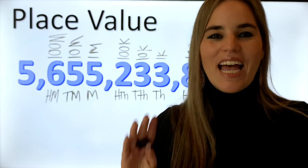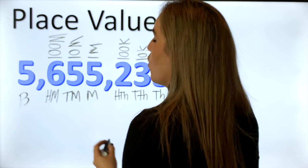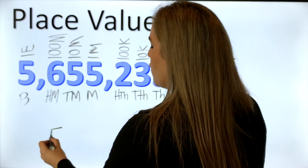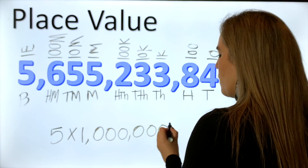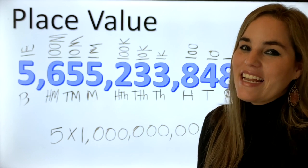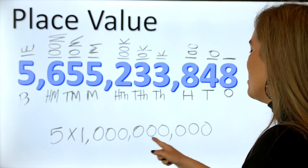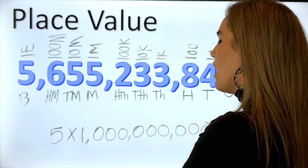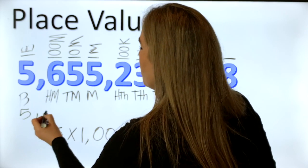Now we're gonna do the billions — this is our last digit. We are in the billions place, which means we have five groups of one billion. So we multiply five times one billion. How many zeros are in one billion? If you said nine, you are one hundred percent correct — one followed by nine zeros is one billion. Five times one billion equals five billion.